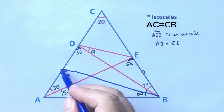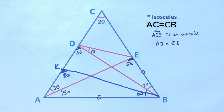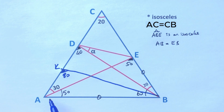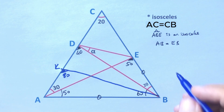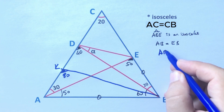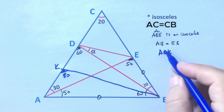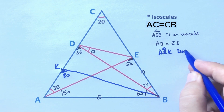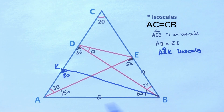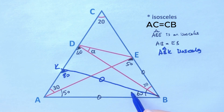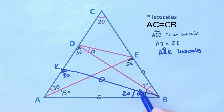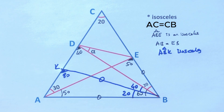Let's call this point K. Therefore, triangle ABK is an isosceles triangle, so these two sides are equal.